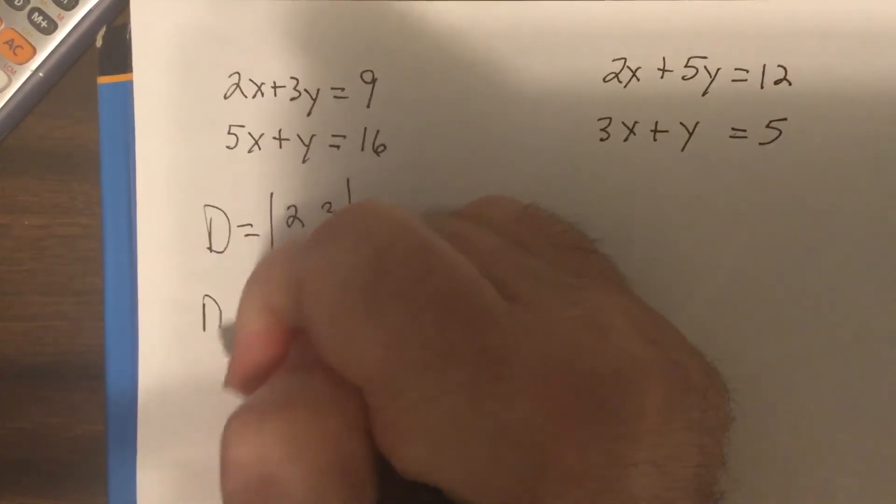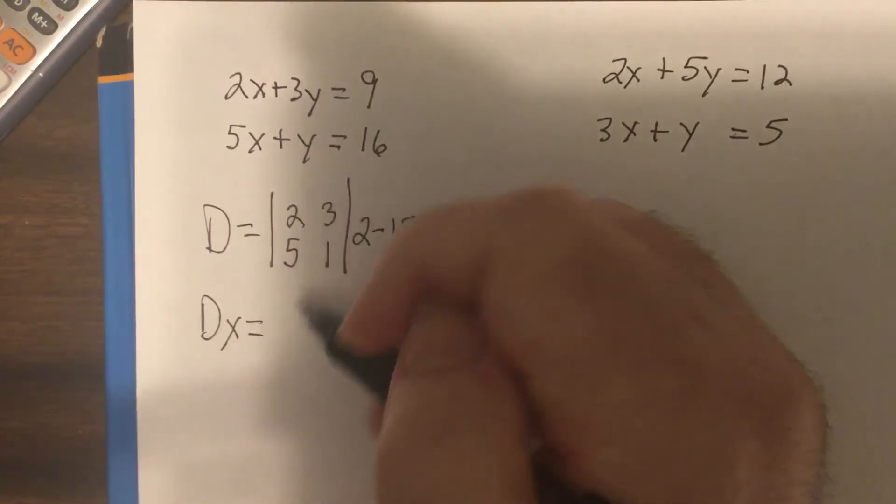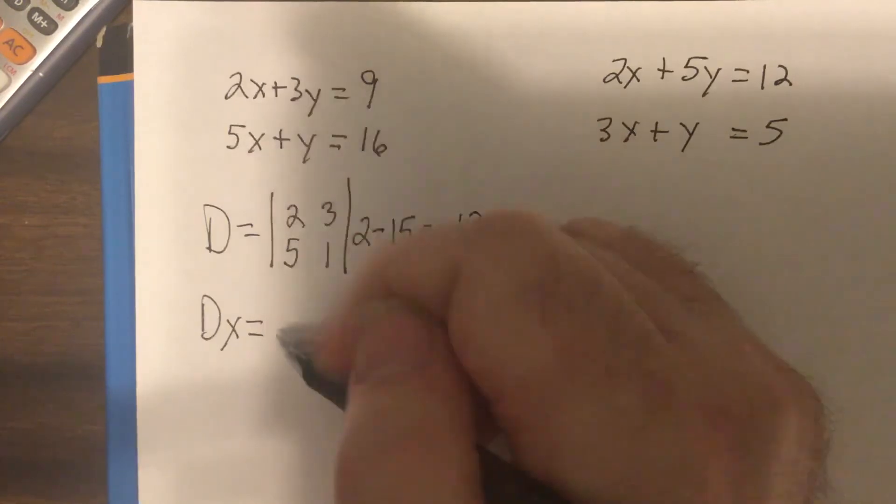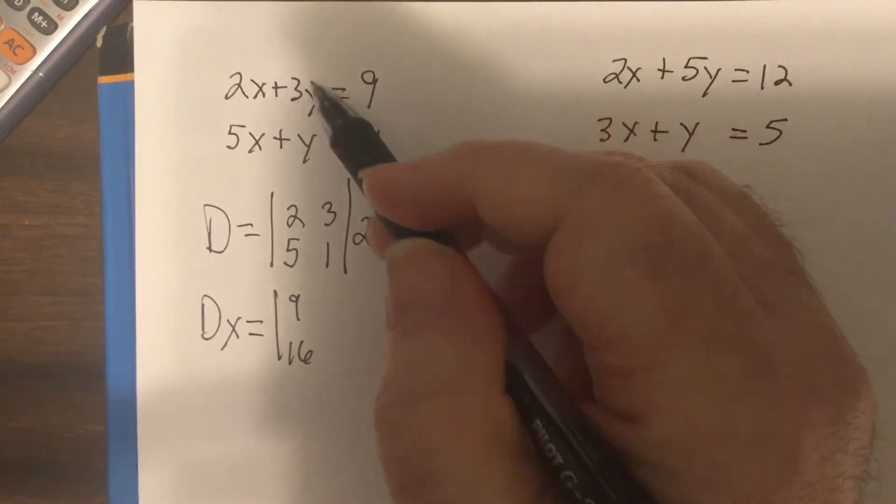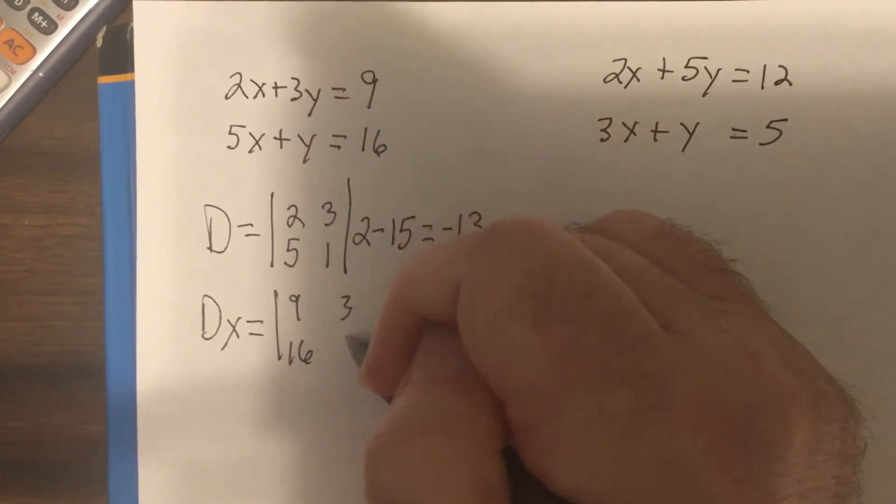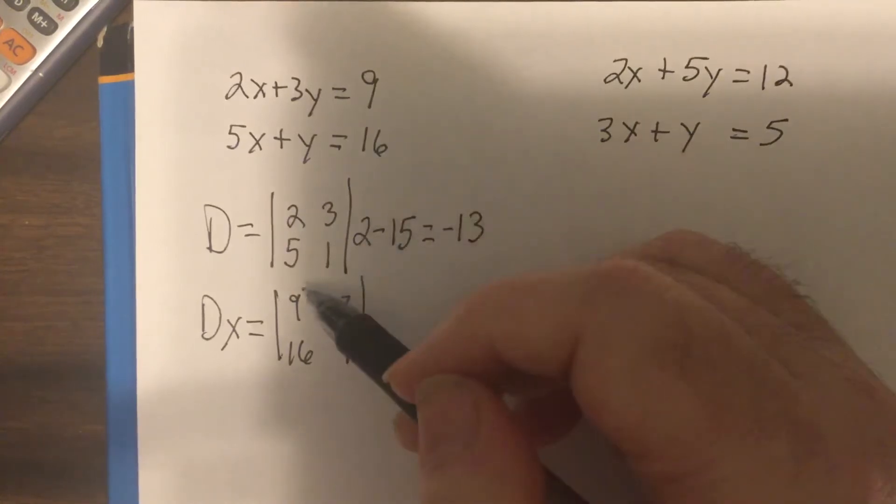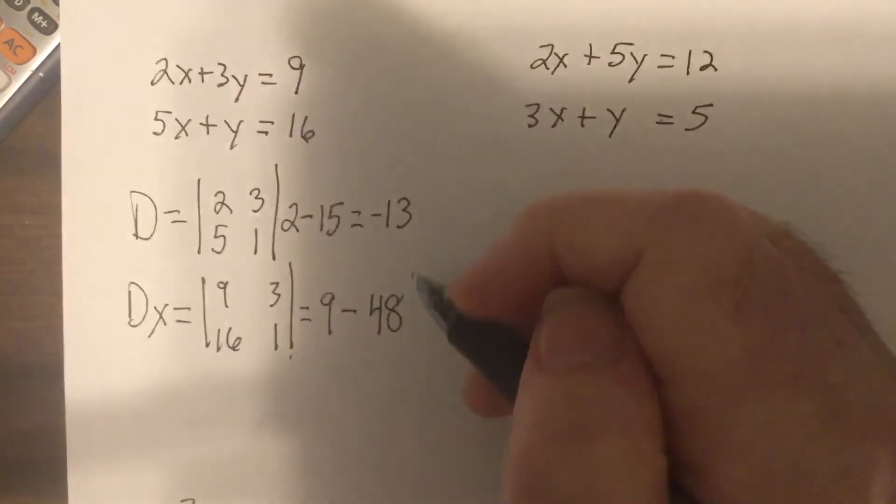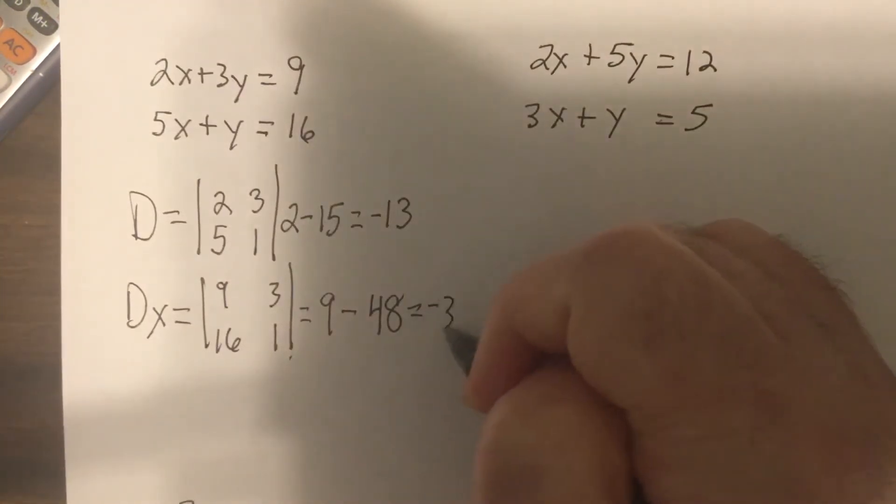So that would be 2 minus 15 is negative 13. Then I find DX. DX is take these coefficients and put in the constants. And just leave the Y's alone. There we go.